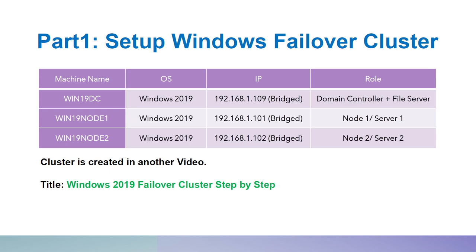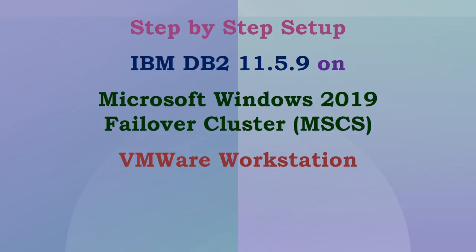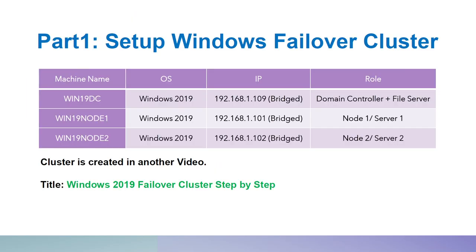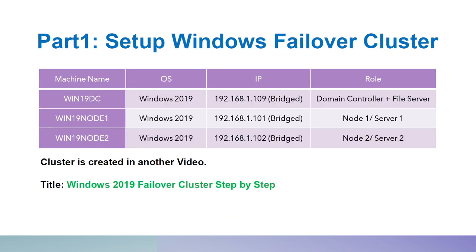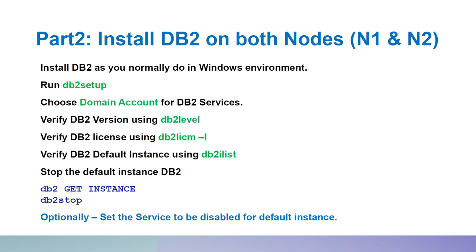The steps are pretty simple — it is actually very easy to set up the Microsoft failover cluster. You must install DB2 on both nodes exactly the same way as a normal installation, with one exception: make sure the DB2 services are running under a domain account. If you install DB2 using a local account, you will have to change it to a domain account later. It is always better to specify the domain account during installation.